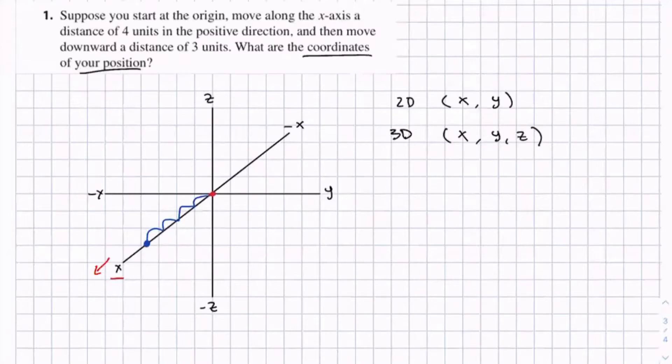And then we need to move downwards a distance of 3 units. Downwards in 3D coordinate plane corresponds to the negative z-axis. If you go up, that's the positive z-axis. So we can go down.